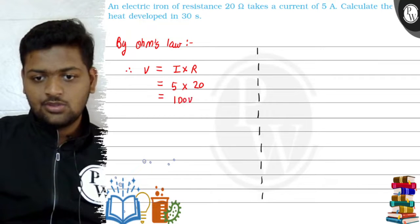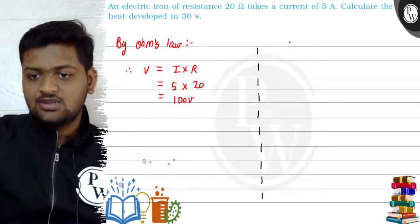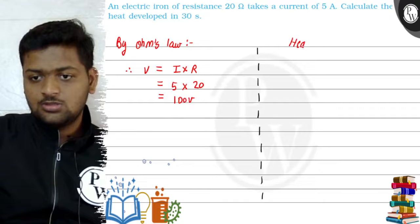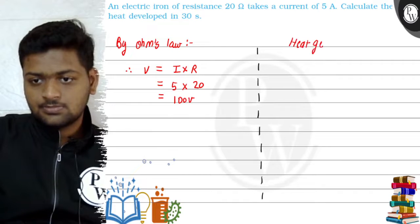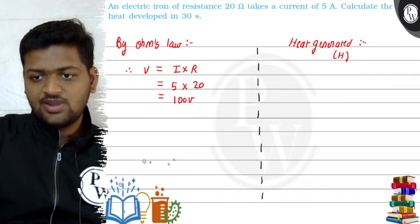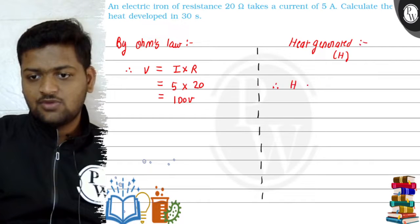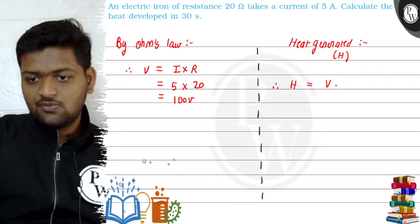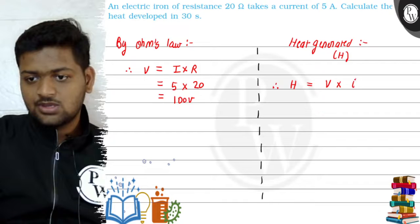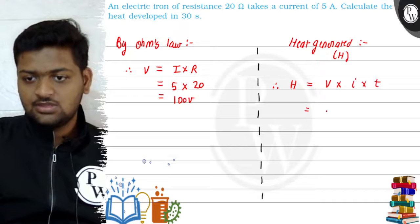So your voltage is 100 volts. Okay, now what we will do is we will find the heat generated. So heat generated H. Now we will find heat generated. So it is a very easy question. We know that the formula of heat generated is voltage V into current I into time T, time in seconds.